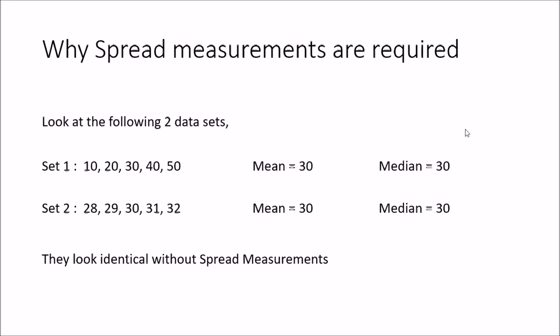First we will see why spread measurements are required. Looking at these two data sets — set 1 and set 2 — if you do the calculations, the mean of set 1 is 30 and the median is also 30. For set 2, the mean is also 30 and the median is also 30. So if I represent this data with mean and median alone, anyone would think these two data sets are similar, but actually they are not. Using central tendencies — mean and median — alone, we cannot tell that these two groups are different.